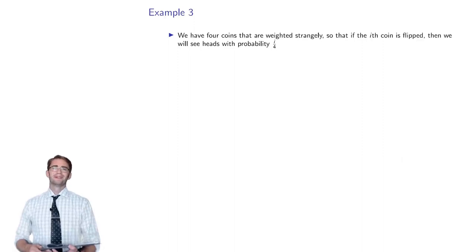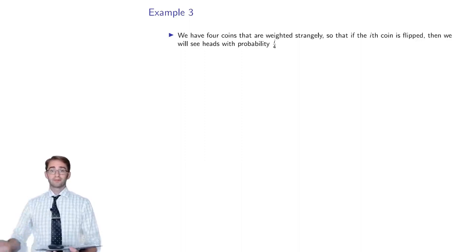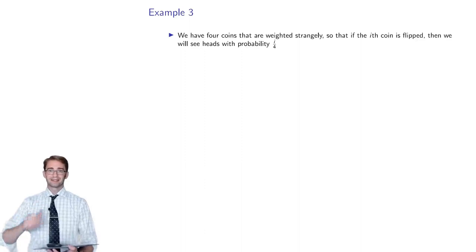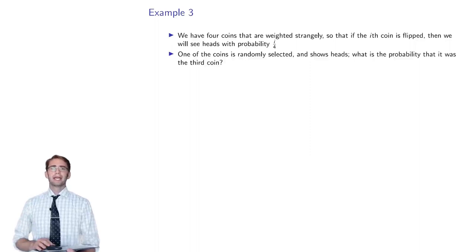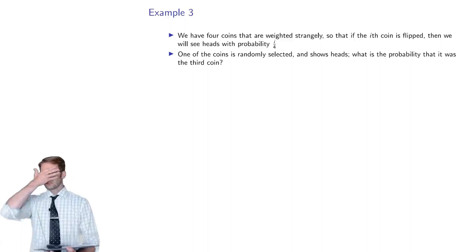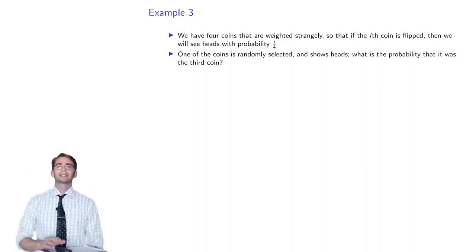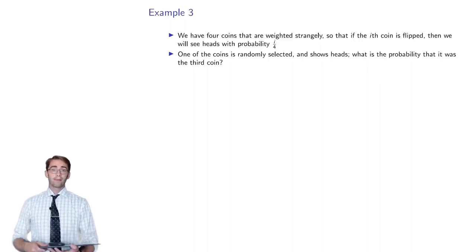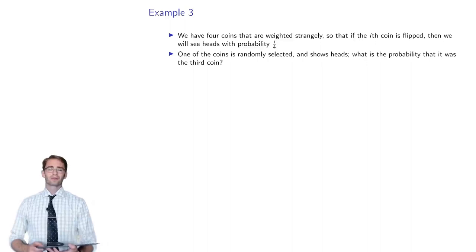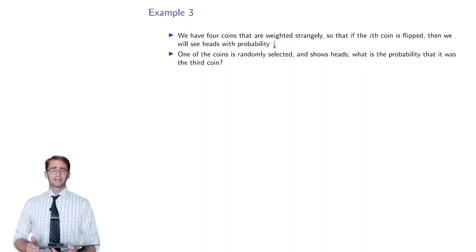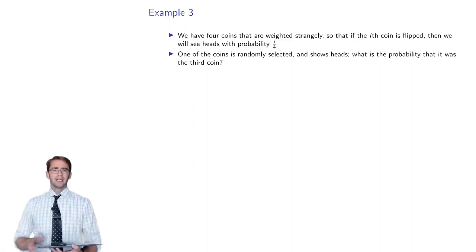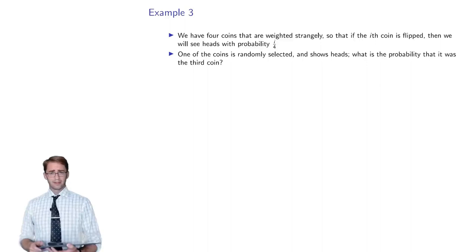The third example is pretty contrived. You have four coins with strange weights so that flipping the i-th coin gives heads with probability i on 4. So coin four always gives heads, while the first coin has only a one in four chance of heads. You select one of these four coins uniformly at random, flip it, and see heads. We want to know: what's the probability that we selected the third coin? Intuitively, you're probably more likely to have had the third or fourth coin.